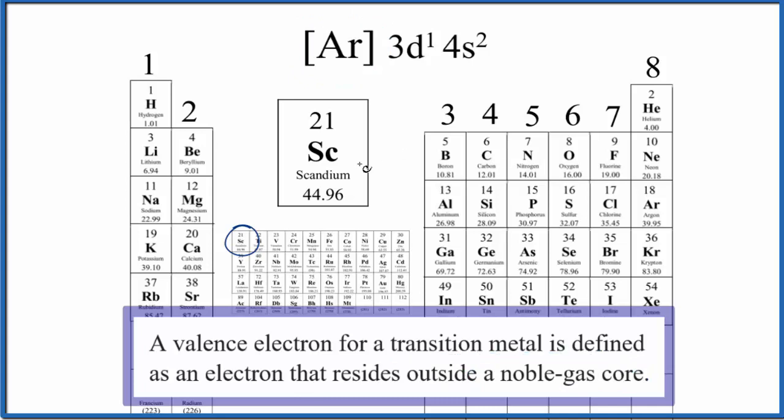So for scandium, we can say that there are three valence electrons. And that kind of makes sense because scandium most often forms ions that have a three plus ionic charge. They lose three electrons. So based on our definition, and what we see when scandium forms ions, we can say that scandium has three valence electrons.